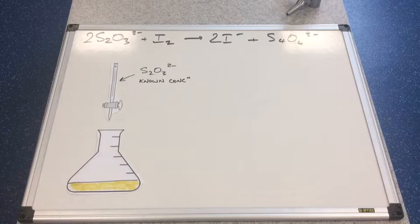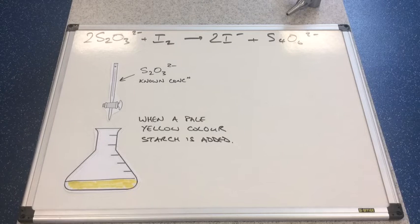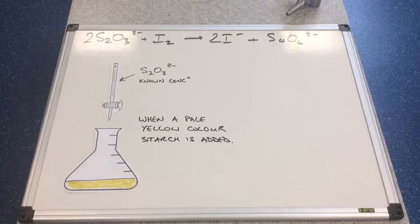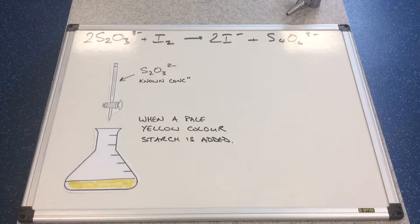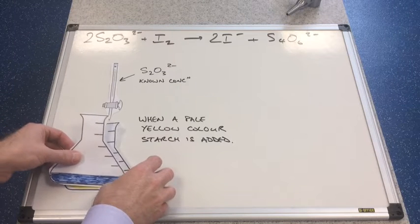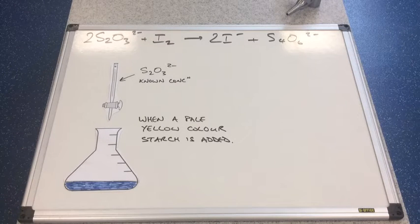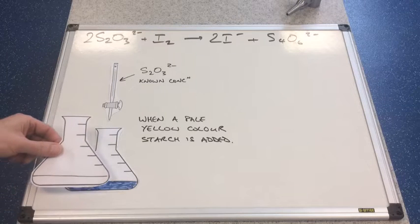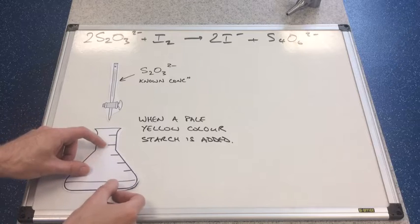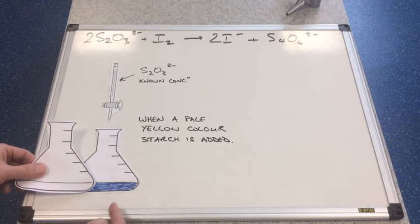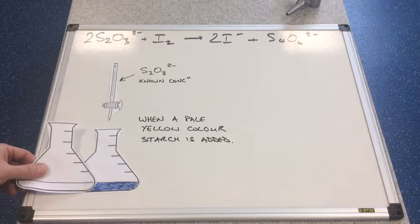There's a neat trick we use to help notice the end point much more clearly. When your flask is a pale yellow colour — sometimes known as a pale straw colour — we add some starch indicator. There will be the tiniest amount of iodine present, and if you remember from biology, starch indicator goes a blue-black colour, so your flask would look like that. The tiniest amount of iodine would cause that blue-black colour to be present. Now it's very easy to see when the iodine has all gone, and you get this nice immediate change from blue-black to colourless.